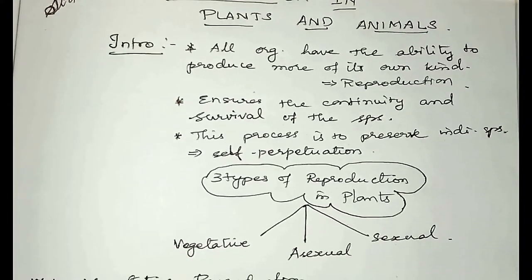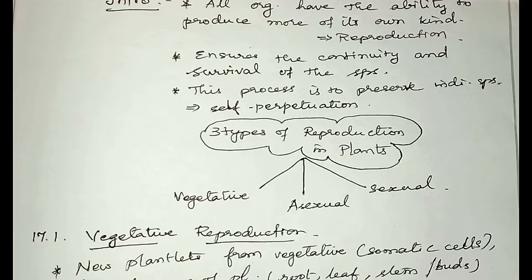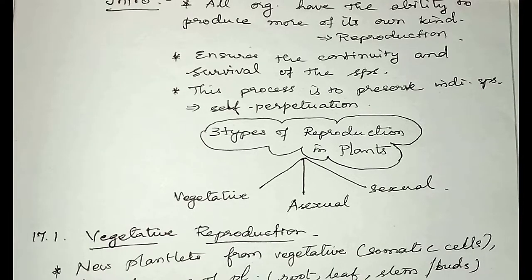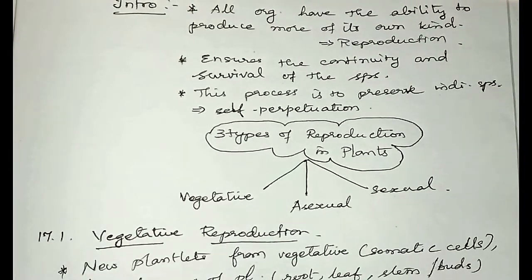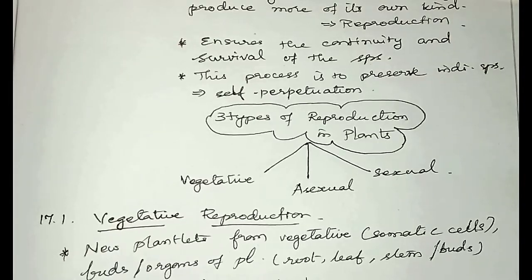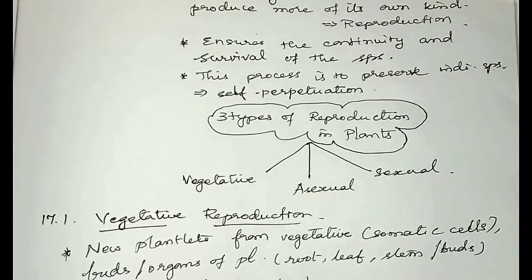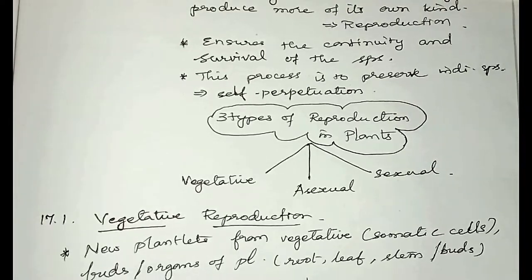First, we are going to learn about vegetative reproduction. New plantlets from the vegetative parts are formed in vegetative reproduction, which are considered as vegetative cells. The somatic cells are called vegetative cells. The plant body has two types of cells — vegetative as well as generative. Generative cells are present in the reproductive organs like flowers, whereas vegetative cells are present in the buds and other organs like root, leaf, stem and buds. When these buds grow, they get detached from the plant and become individual daughter plants. This happens only through mitotic division.